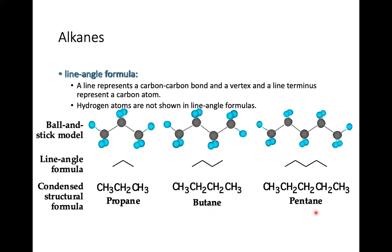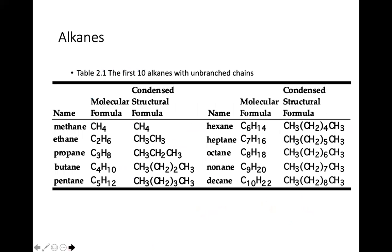Pentane consists of five carbons: CH3CH2CH2CH2CH2CH3. Here is the table showing the ten unbranched alkanes — these are the parent names with no substituents. Starting from methane (1 carbon), ethane (2), propane (3), butane (4), pentane (5), hexane (6), heptane (7), octane (8), nonane (9), decane (10).